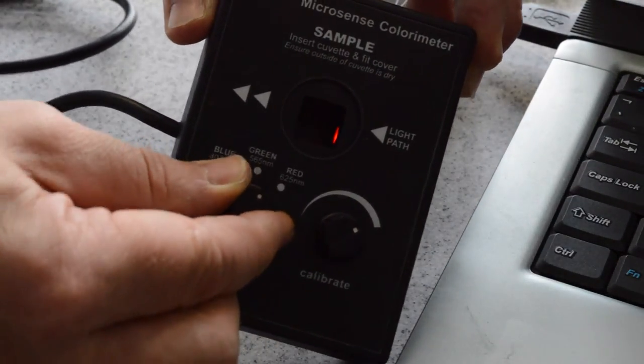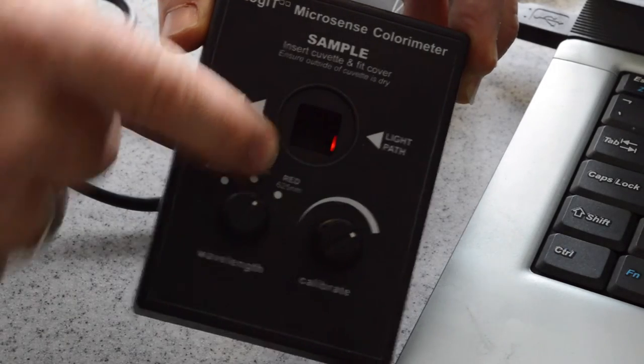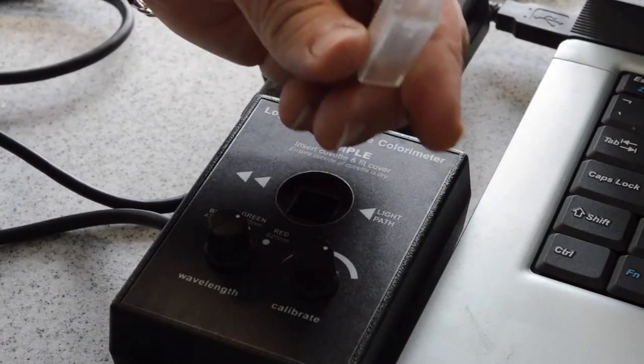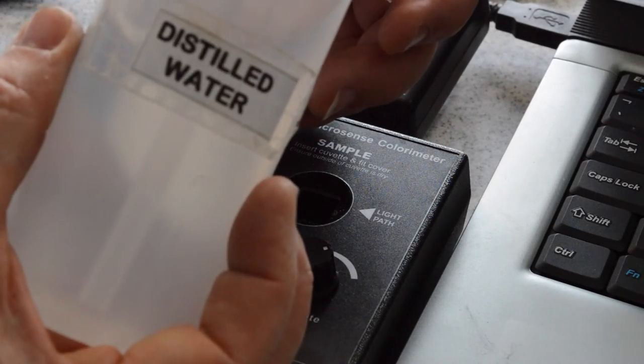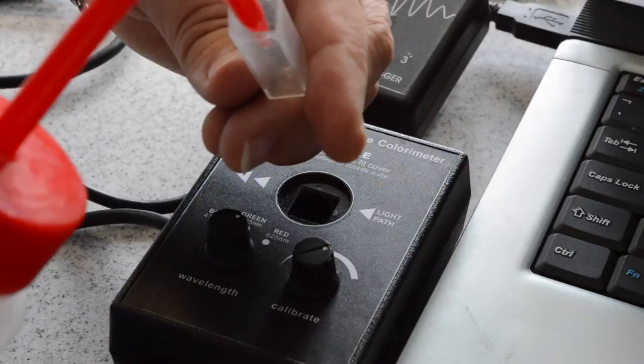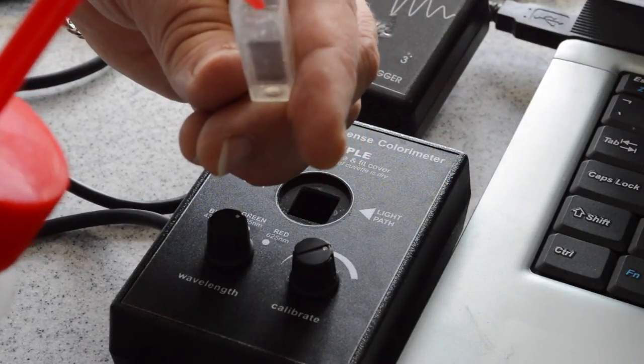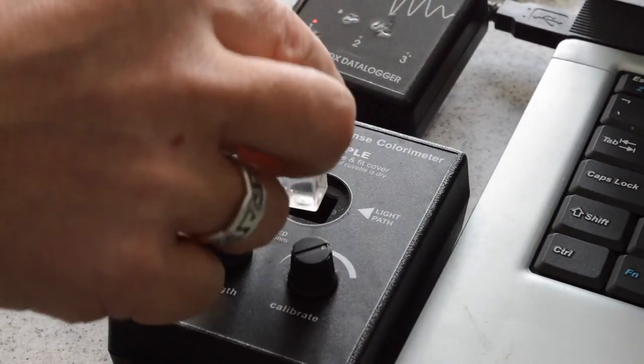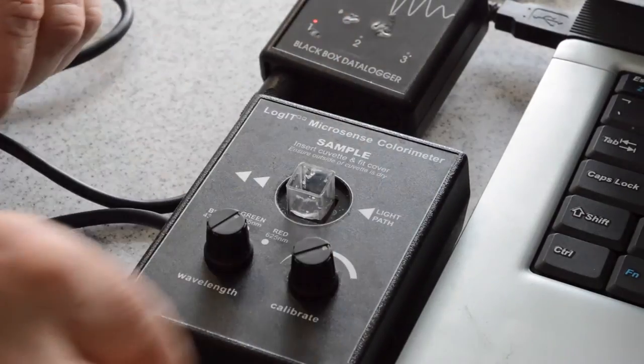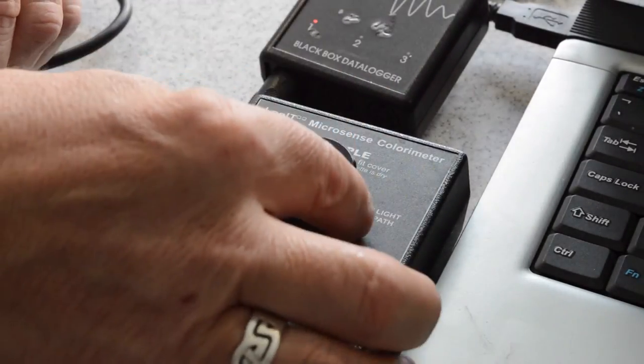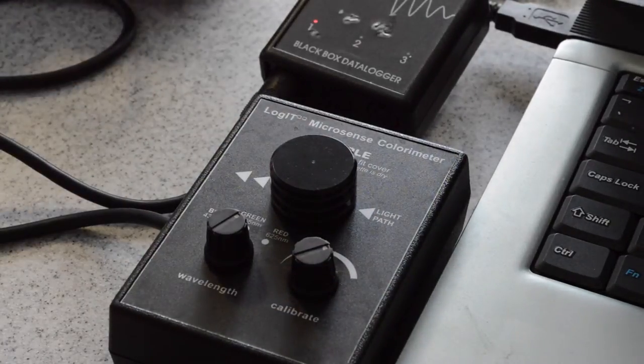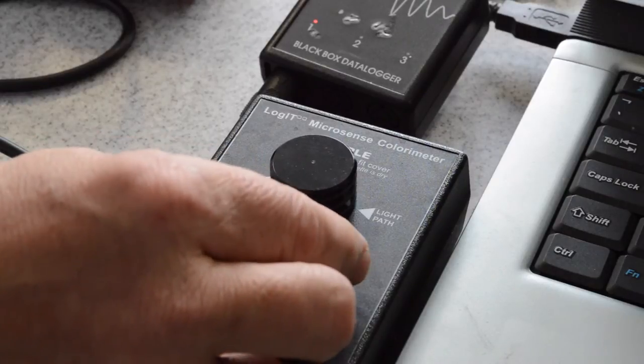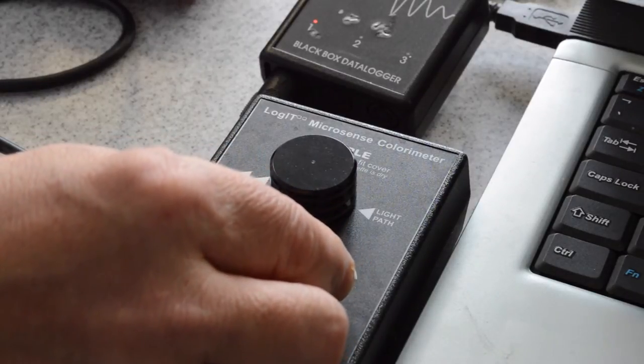For this experiment, use the red spectrum. This is a cuvette. To calibrate the colorimeter, fill the cuvette with distilled water, place into the colorimeter and place on the cap. Then calibrate the colorimeter until a value of 100 is seen on the screen.